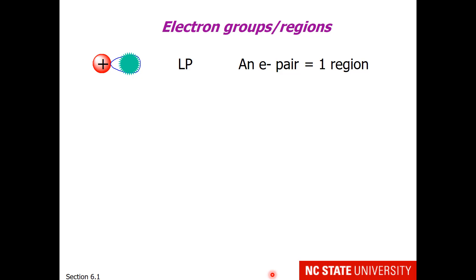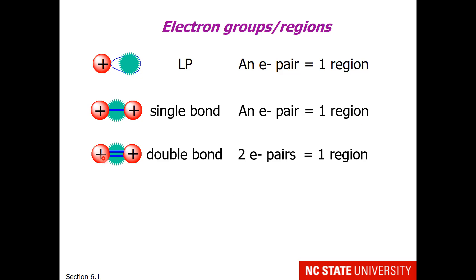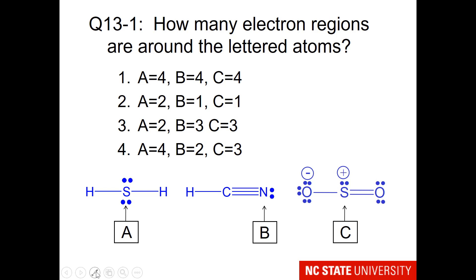So in order to apply VSEPR, first students need to be able to count electron groups or regions. A lone pair attached to an atom is one electron region. A single bond attached to an atom is one electron region. A double bond attached to an atom is still one electron region. And a triple bond attached to an atom is still one electron region.